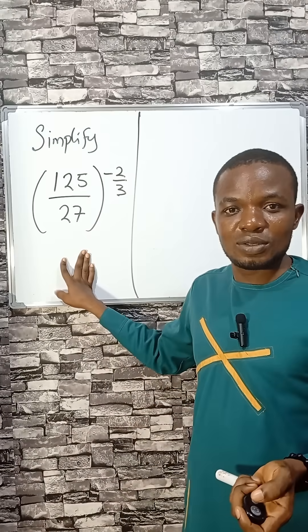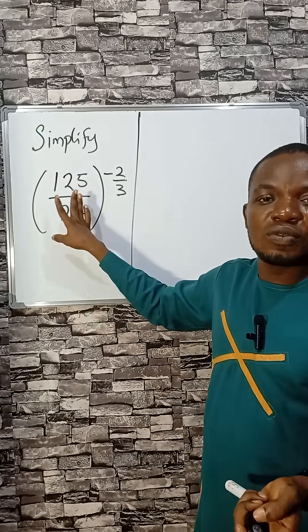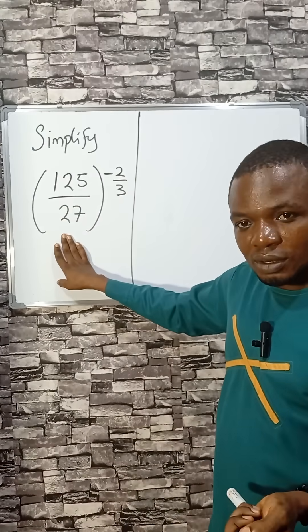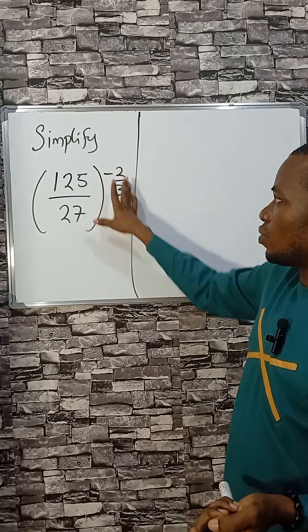First here, we can use a lot of indices to solve this. 125 divided by 27, all raised to the power of minus 2 over 3.